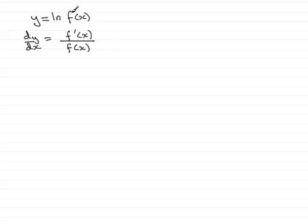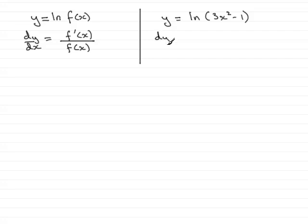Assuming that you're familiar with this, let's give you a demo. Suppose we had y equals the natural log of 3x squared minus 1, and we had to differentiate this to find dy/dx. Well, according to this result, our f(x) is 3x squared minus 1, which goes in the denominator. And in the numerator goes the differential of f(x) — differentiating 3x squared minus 1 with respect to x gives 6x.